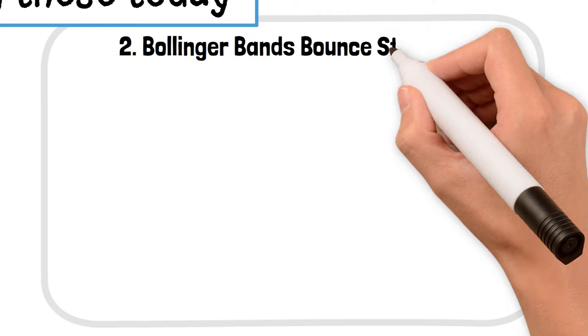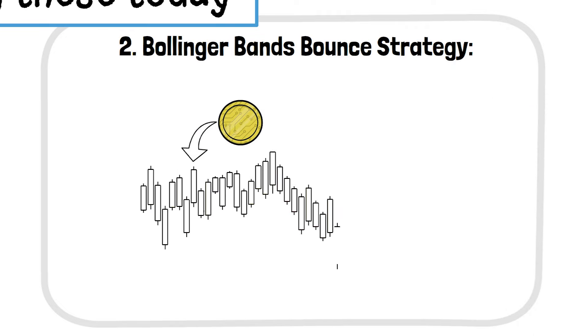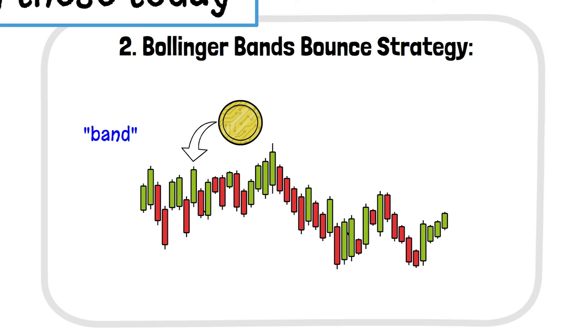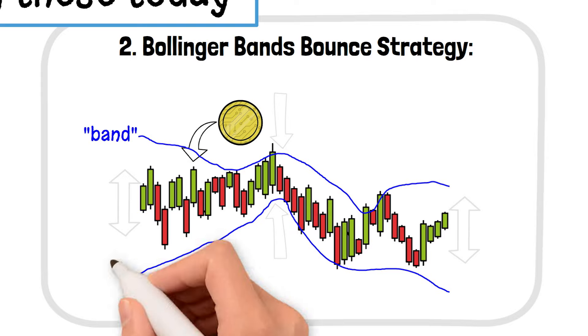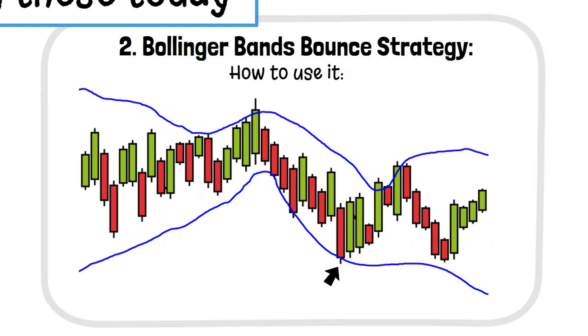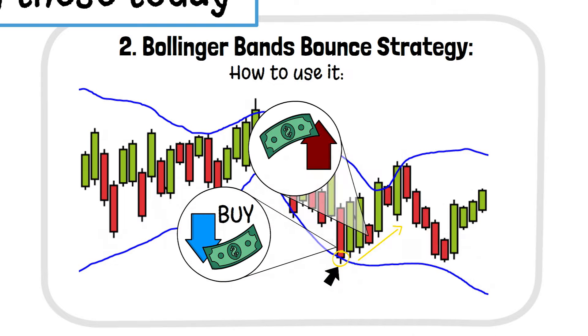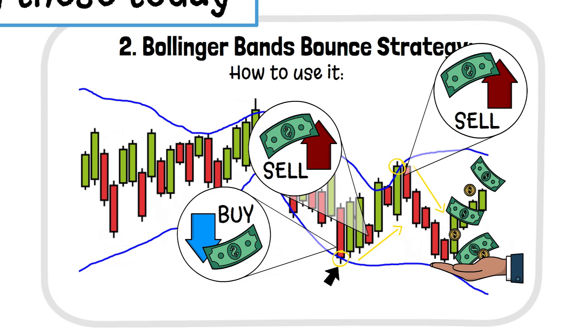Second, Bollinger Bands Bounce Strategy. Bollinger Bands are another cool tool that helps you see when an asset is too high or too low. They create a band around the price that expands and contracts based on volatility. When the price hits the lower band, it usually bounces back up, so you can buy at the lower band and sell near the middle. When it touches the upper band, it tends to drop, so you can sell and make a quick profit on the downside.